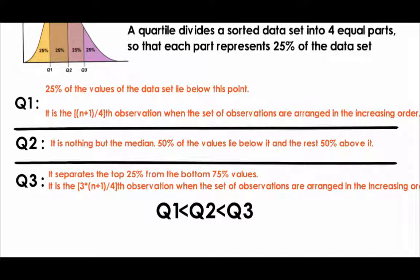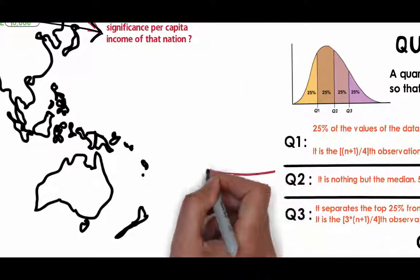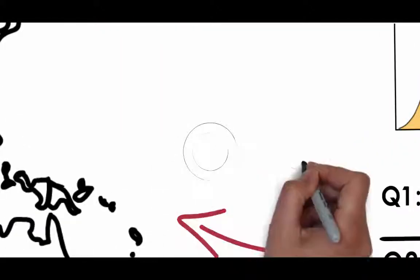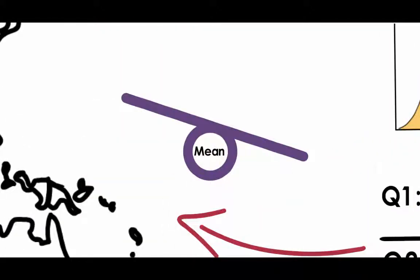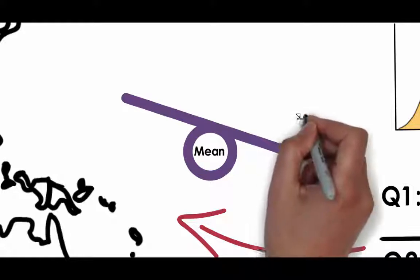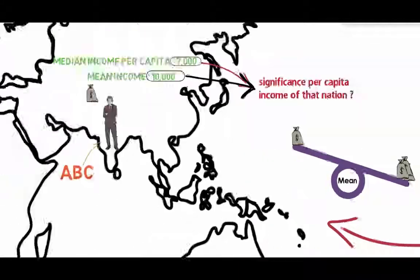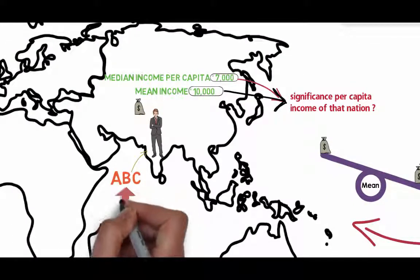Now that we understand the concepts of mean, median, mode, and quartiles, let us go back to the statement at the beginning of the module. Now that statement makes much more sense. It is describing the characteristics of the set of observations of individual incomes of citizens of the nation ABC through the use of mean and median.